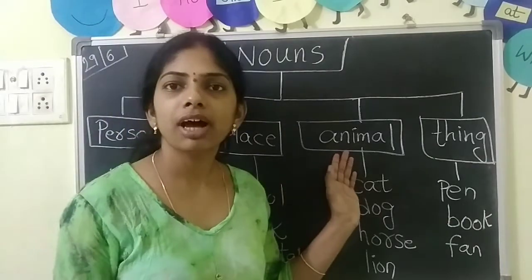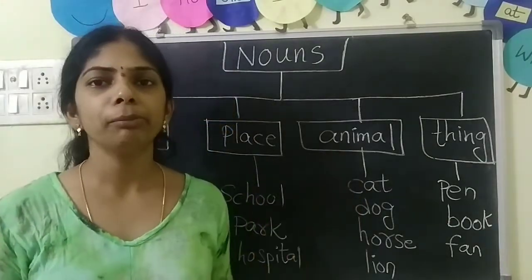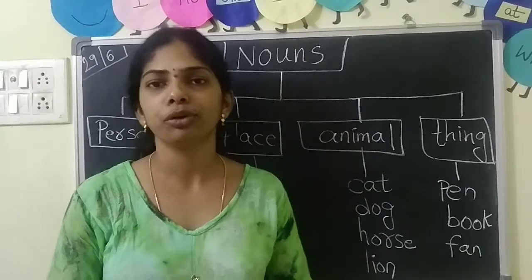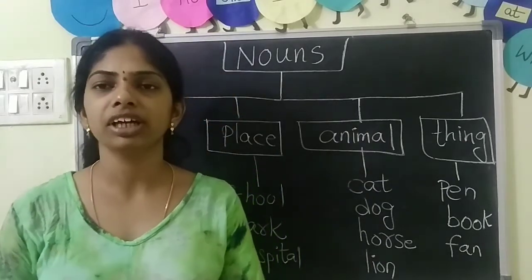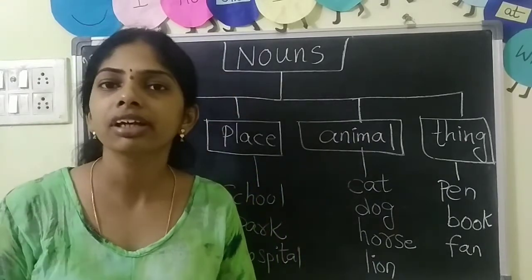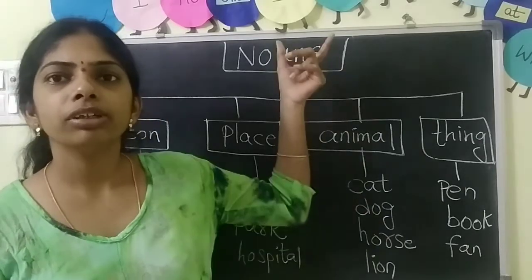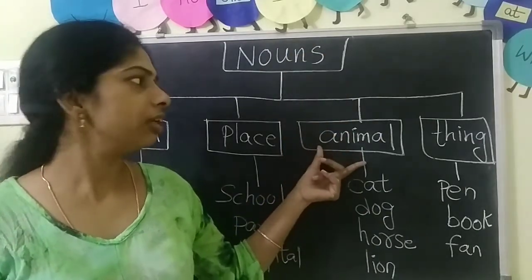Animal — noun can be an animal. Animal means any animal: cat, dog, horse, lion, tiger, bear. All these are animal names. So noun can be an animal.